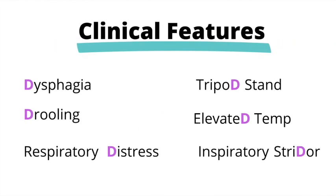The clinical features are dysphagia, drooling, respiratory distress, tripod stand, elevated temperature, and inspiratory stridor. These are all extremely high yield because question stems can approach these in different ways. For example, we can see options where they're trying to confuse you, putting options like expiratory stridor versus inspiratory stridor.